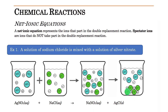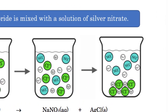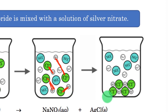What net ionic equations do is remove certain ions from the solution. We want to focus on the ions that are actually taking part in the double replacement reaction. There are going to be two kinds of ions: the ions taking part in the formation of the solid, and the spectator ions that don't take part in the overall reaction. If we take a closer look at the overall reaction, we've got silver nitrate solution and sodium chloride solution mixed together. What's happening is that the silver and chloride ions are binding together, creating this insoluble solid, and you get a buildup of solid — the precipitate — forming at the bottom.